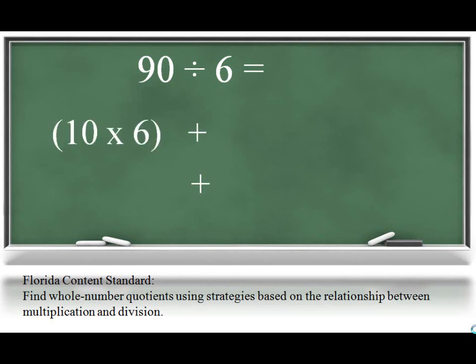They can easily solve 60 using what they have learned about base 10 patterns. That leaves you with 30, which is 5 groups of 6. 10 groups and 5 groups would be 15 total groups of 6 in 90.